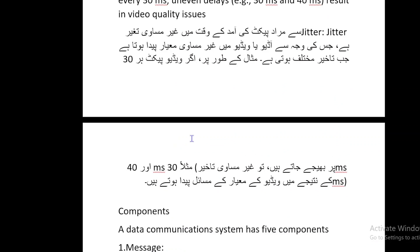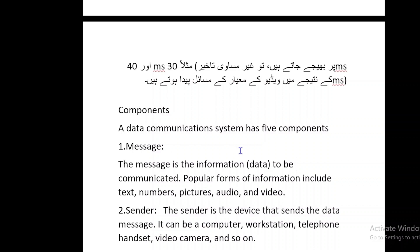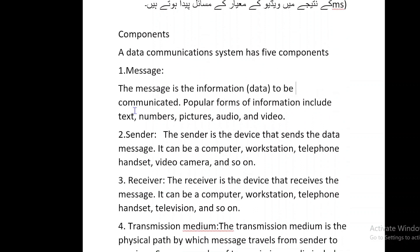Components: a data communication system has five components. One: message. The message is the information or data to be communicated. Popular forms of information include text, numbers, pictures, audio, and video.